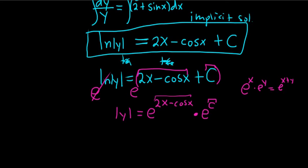When we drop the absolute value, we always get a plus or a minus. So we get y equals plus or minus e to the c, I'm putting it in the front, and this is e to the 2x minus cosine x. Now, if you're wondering why you get a plus or minus, let me explain that. Because most people just memorize it.